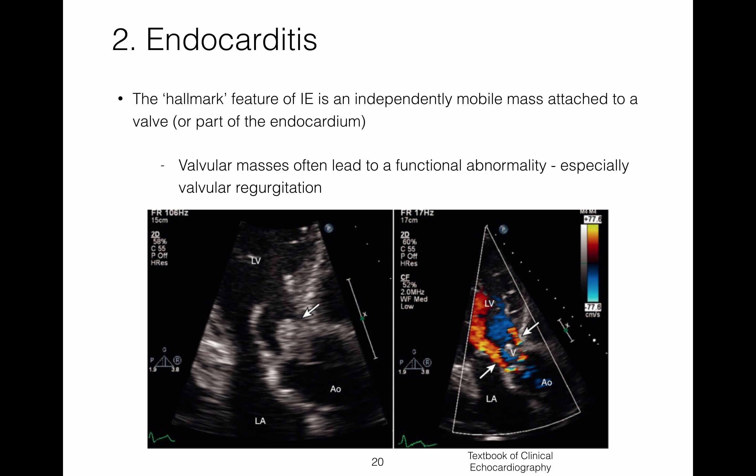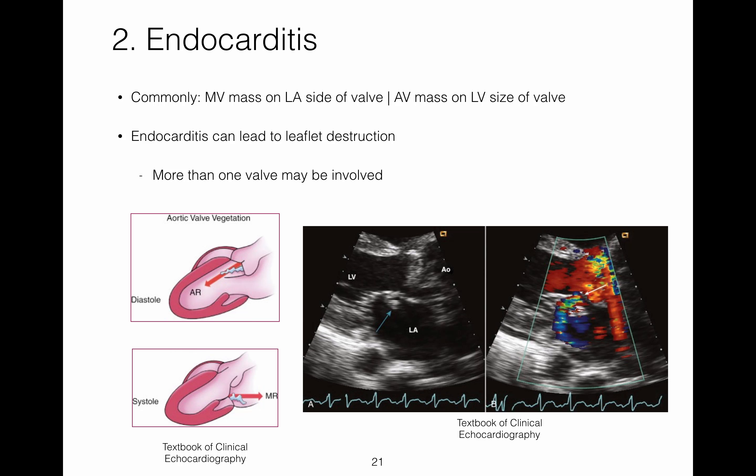When endocarditis is suspected, the hallmark feature of infective endocarditis is an independently mobile mass attached to a valve or part of the endocardium. An independently mobile mass has movement that is very apparent and may be somewhat chaotic. A significant valvular mass often leads to a functional abnormality as well, especially valvular regurgitation. Common locations for valvular masses to occur are the atrial side of the mitral valve and the ventricular side of the aortic valve.